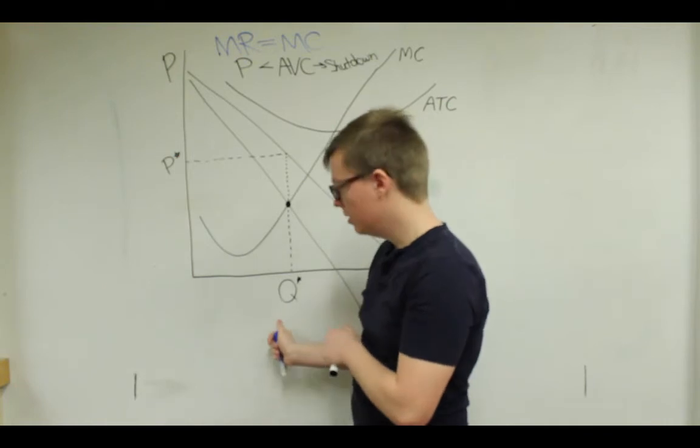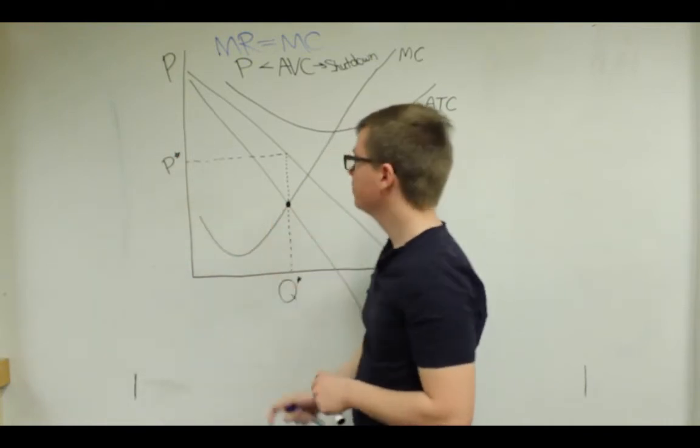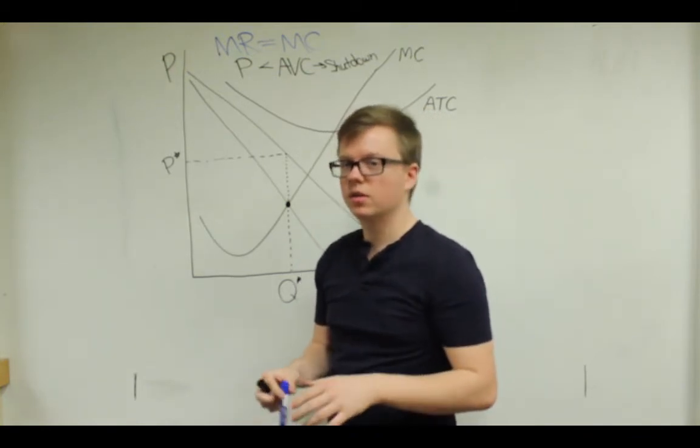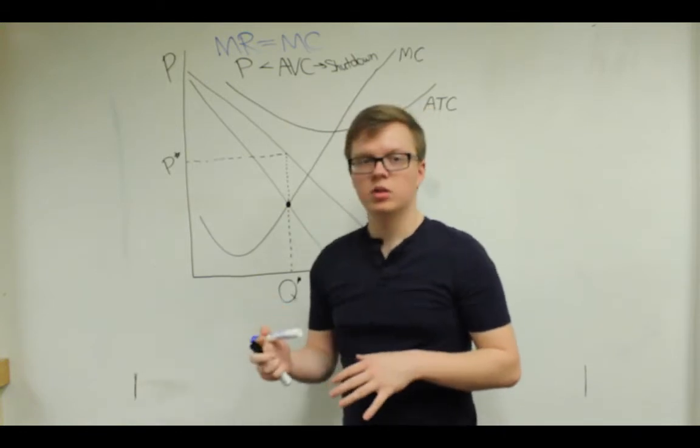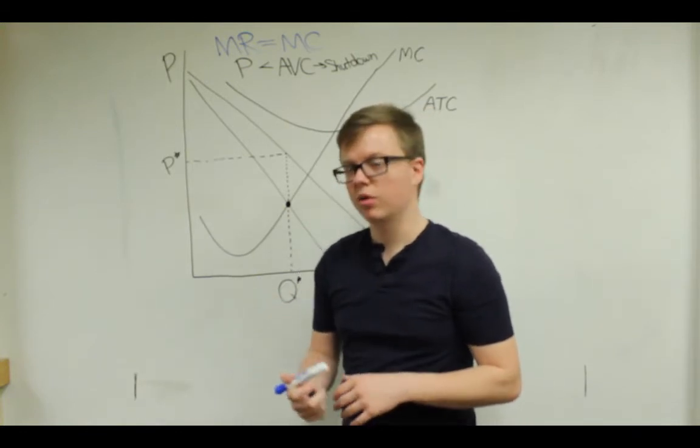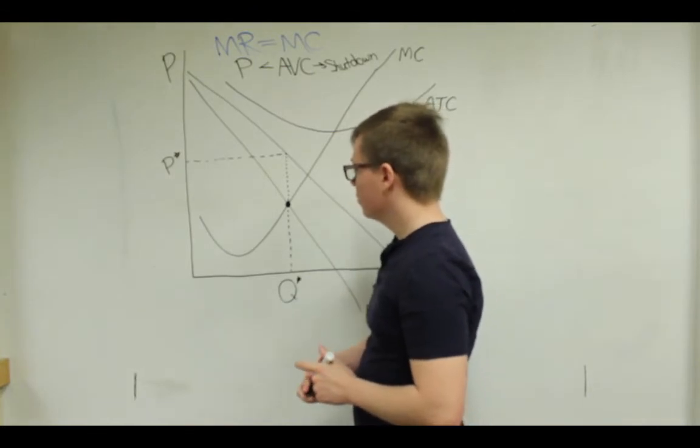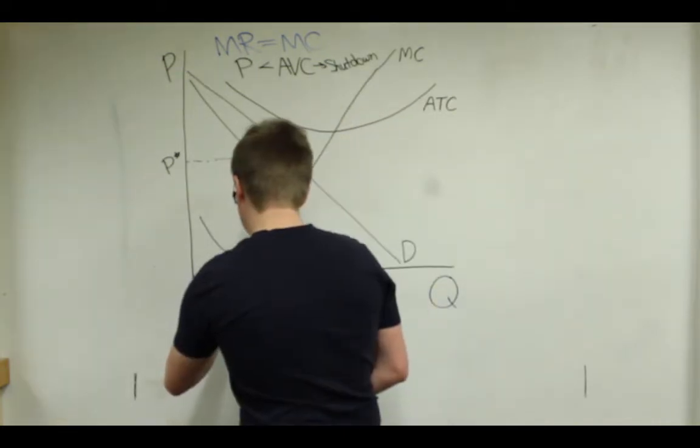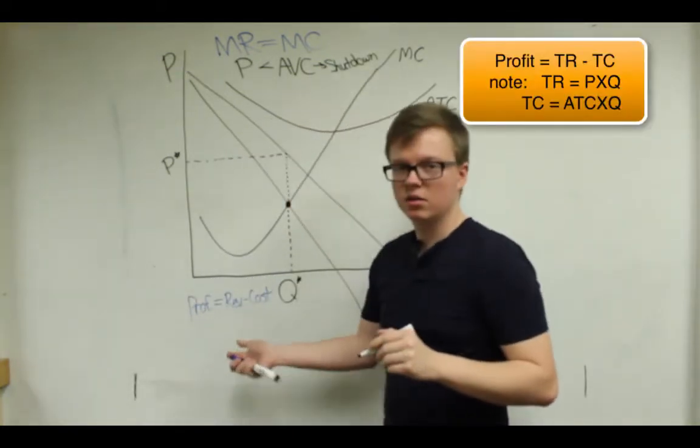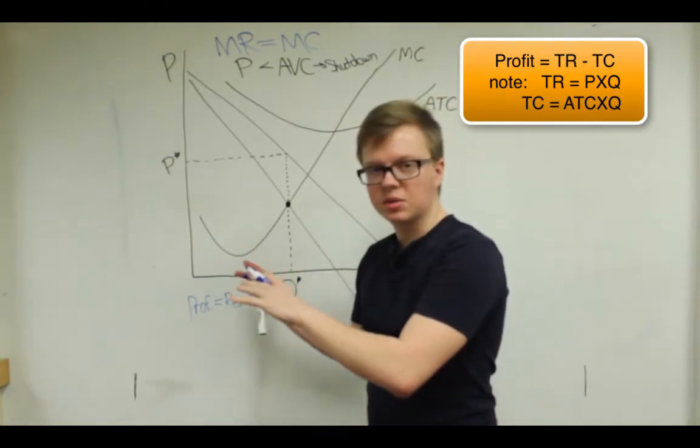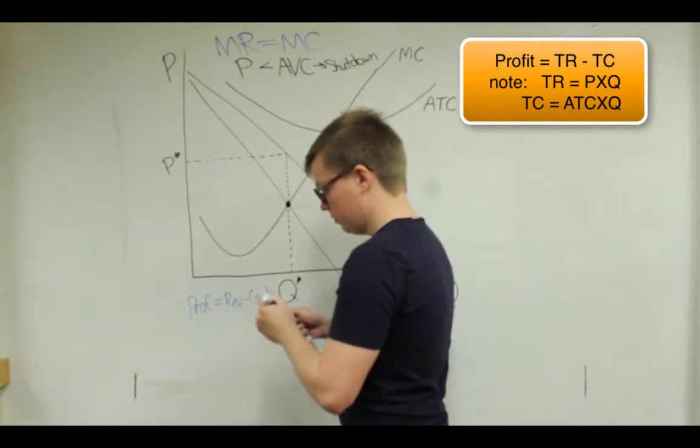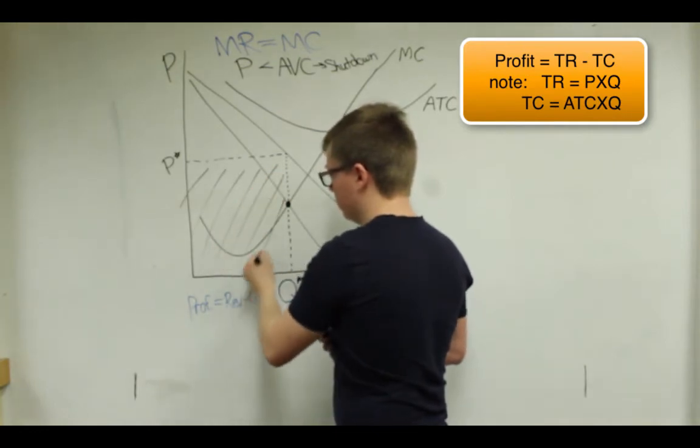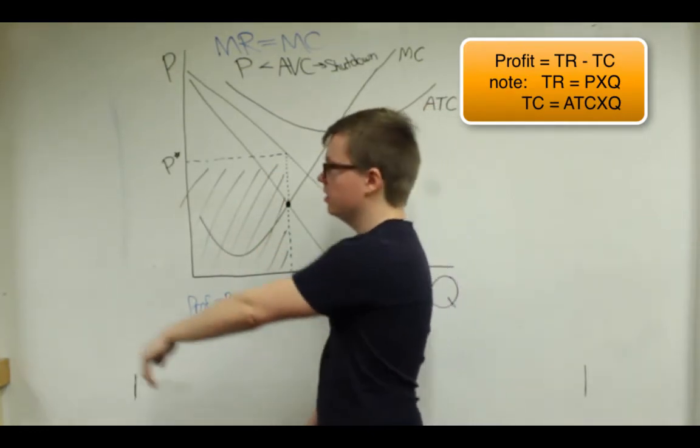And if they do that, they're producing this quantity, selling it at this price. So now that we know how much they're going to produce, we might want to know how much money they will make or lose, what's their profit or loss. And if you remember, profit equals revenue minus cost always. So revenue is just price times quantity. So on this graph, it would be this square here because they're producing this quantity at this price.